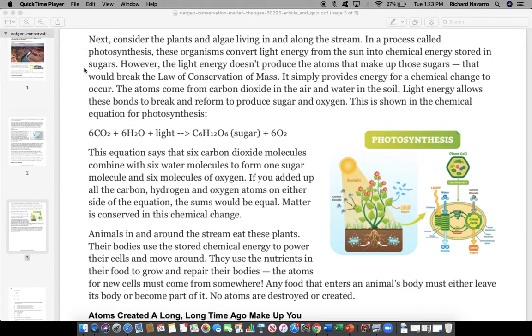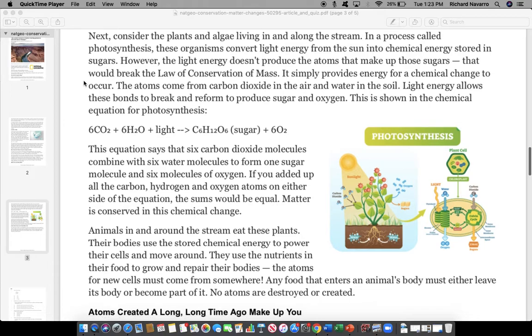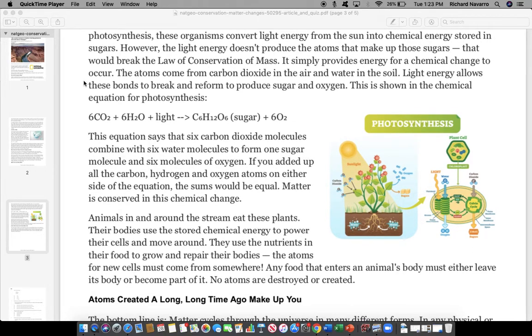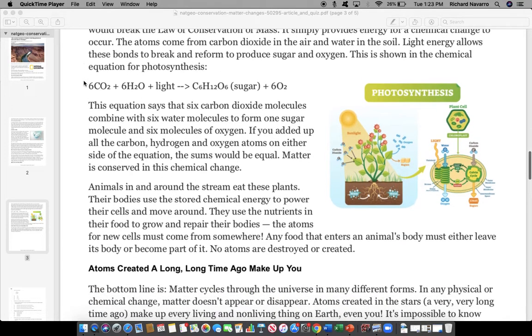It simply provides energy for a chemical change to occur. The atoms come from carbon dioxide in the air and water in the soil. Light energy allows these bonds to break and reform to produce sugar and oxygen. This is shown in the chemical equation for photosynthesis.